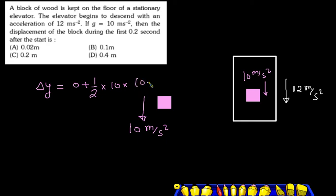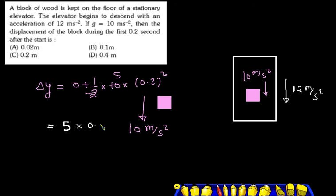So we have t squared = 0.2 squared = 0.04. This gives us 5 into 0.04. The calculation: 5 × 0.04 = 0.2. So the displacement is 0.2 meters.